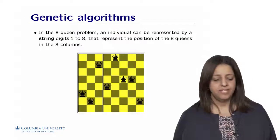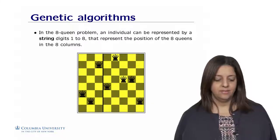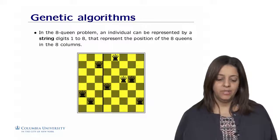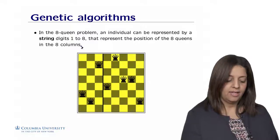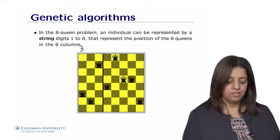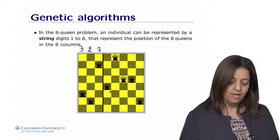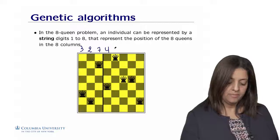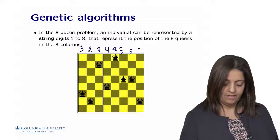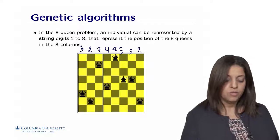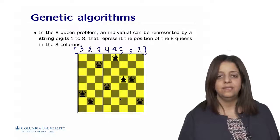In the eight queen problem, for example, an individual can be represented by a string of digits between one and eight that represent the position of the eight queens in the eight columns. So, for example, for this first column, the queen is located at position three. In the second one, it's position two. In this one, position seven. Then position four, position eight, position seven, six, five, and five. And then, at the end, position two. So, this string here would represent the encoding of this state in the search space.